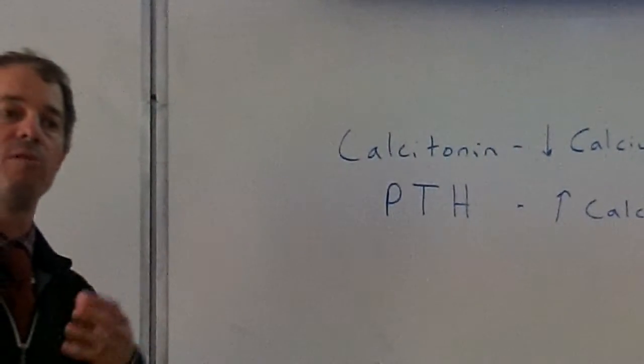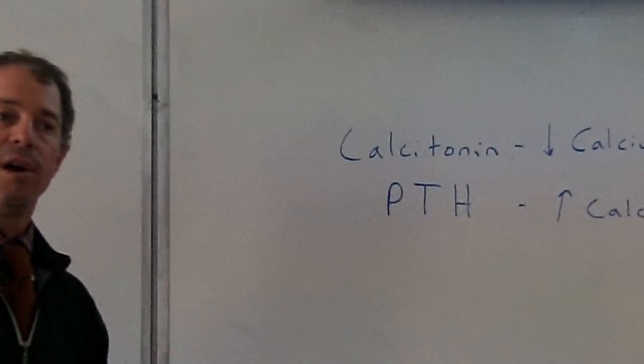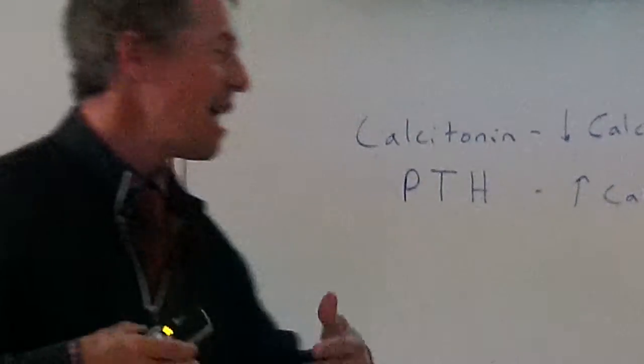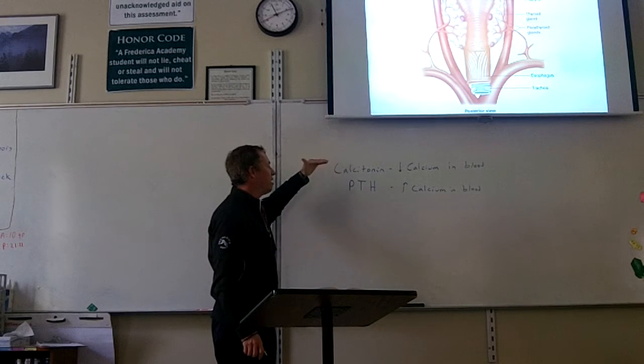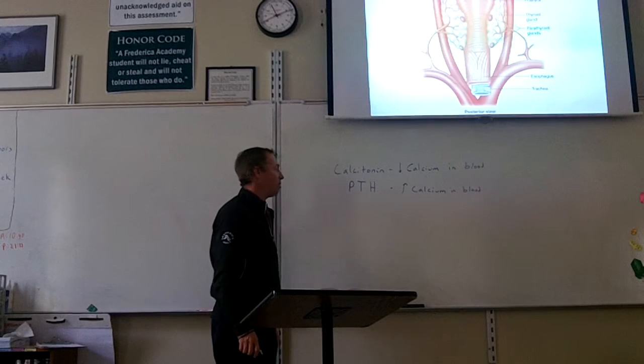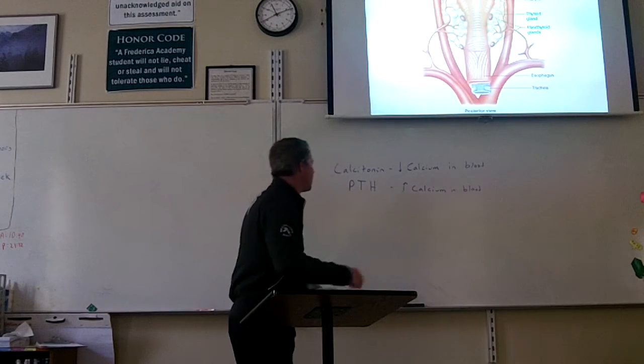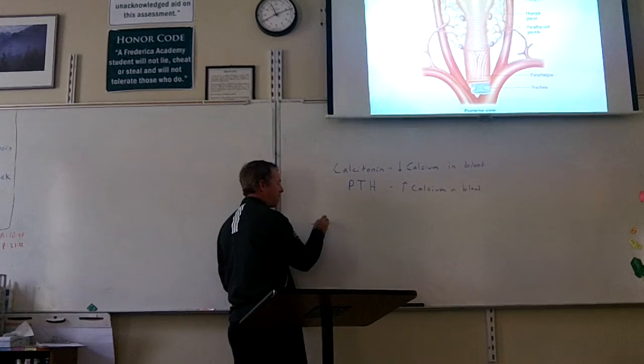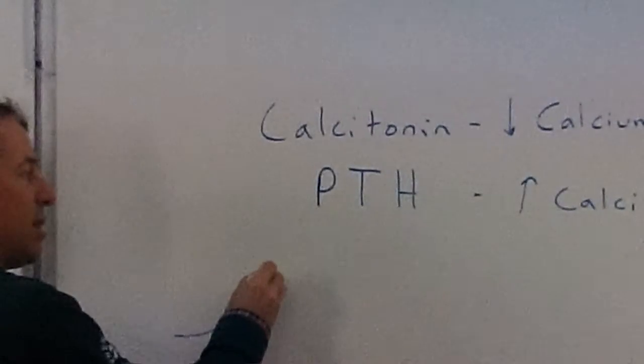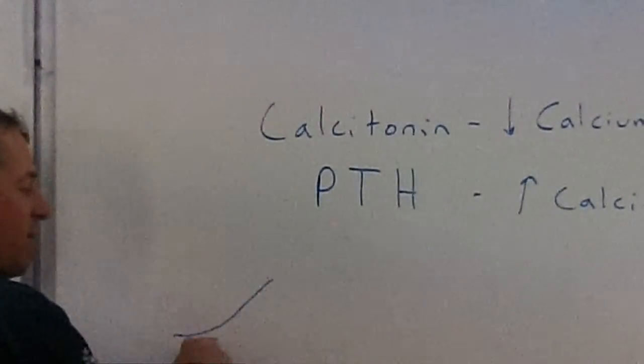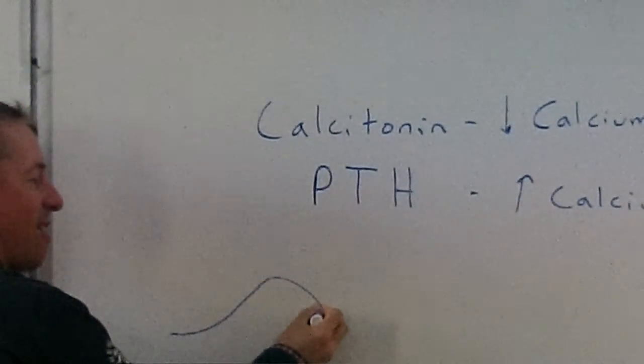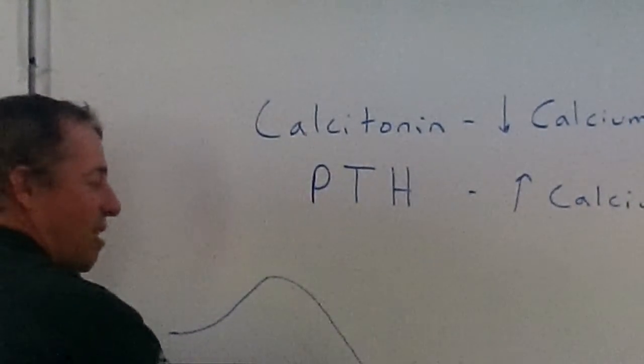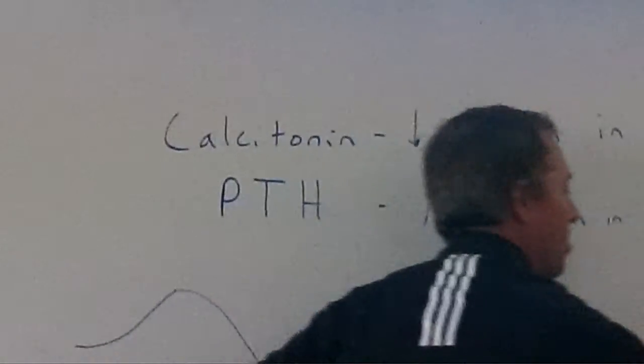The thyroid gland emits calcitonin, the parathyroid gland emits parathyroid hormone, and these act opposite to one another. But what do they do? Calcitonin lowers calcium levels. Parathyroid hormone raises calcium levels in the blood.